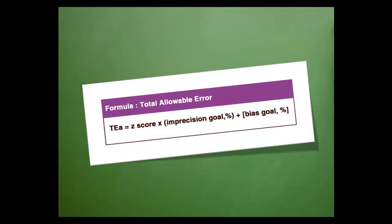The TEA formula consists of three components: z-score, imprecision goal percent or CVA, and the bias goal percent or BA.